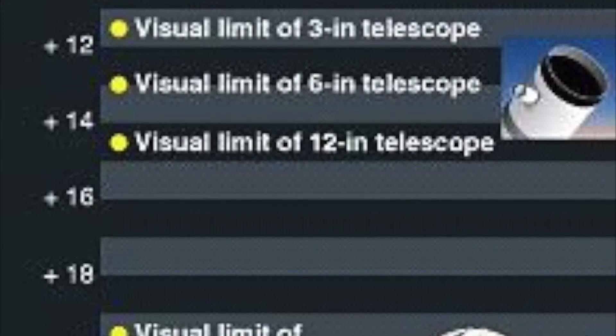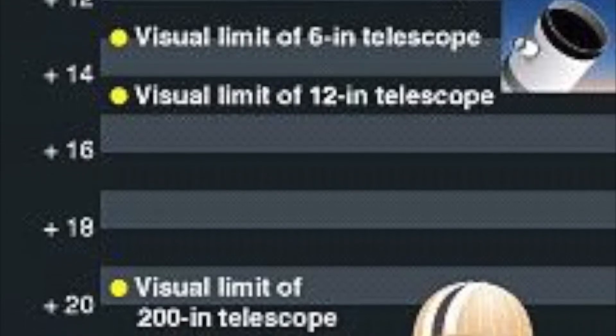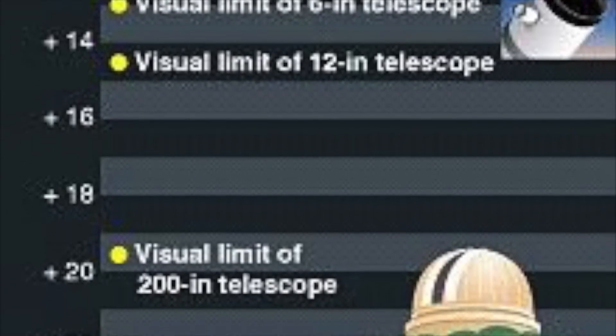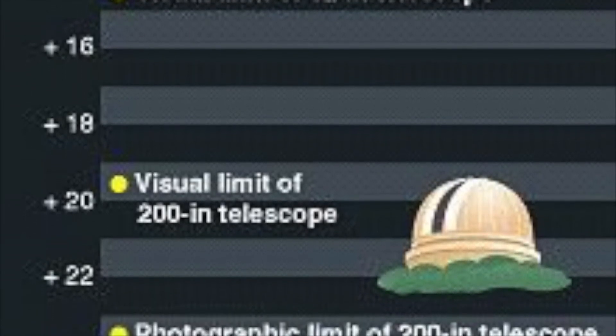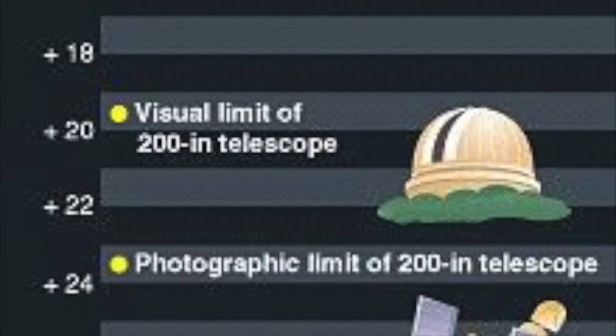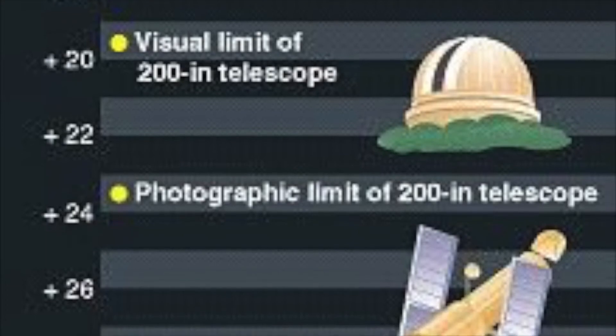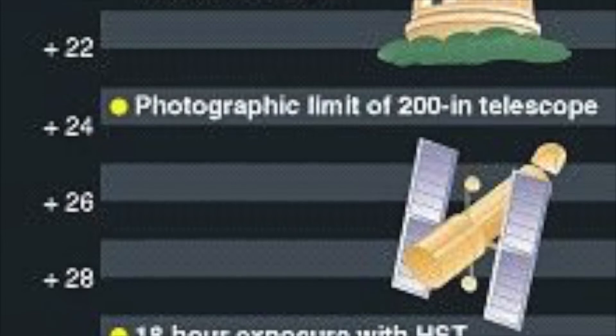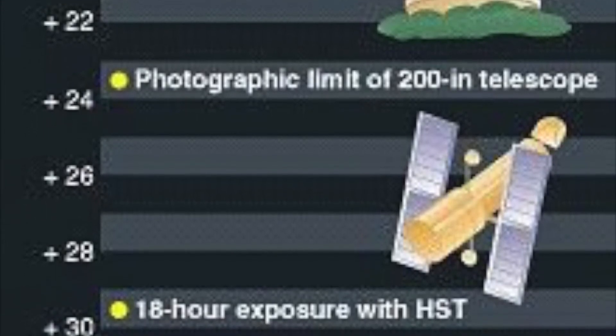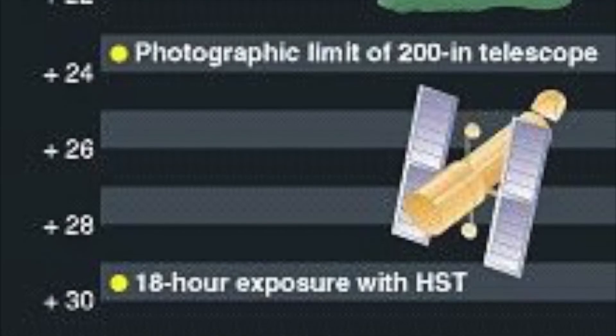Observing through a 200-inch telescope like the Hale Telescope at Mount Palomar Observatory near San Diego can help us see stars as dim as the 20th magnitude. But allowing the telescope to observe longer exposures over longer periods of time can increase the realm of possibility and bring forth stars of the 24th magnitude. In fact, the dimmest stars we've managed to observe have had an apparent magnitude near positive 30, and this has only been made possible by an 18-hour long exposure taken by the Hubble Space Telescope.